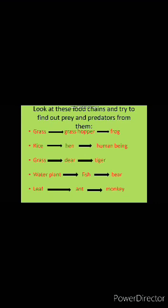Look at these food chains and try to find out prey and predators from them. Number one: grass → grasshopper → frog. Number two: rice → hen → human beings. Number three: grass → deer → tiger. Number four: water plant → fish → bear. Number five: leaves → ant → monkey. Who is prey and who is predator in each food chain? I think the concepts of prey and predators are now clearer in your mind.